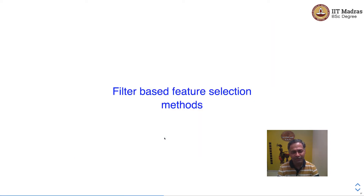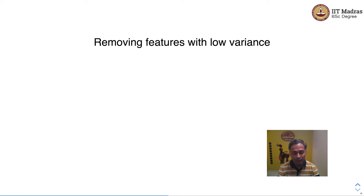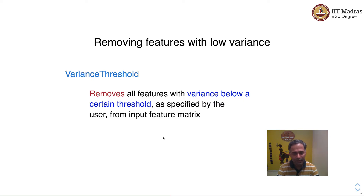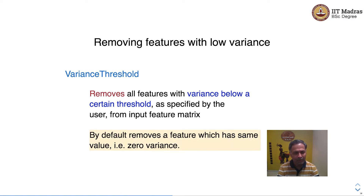Let's look at filter-based feature selection methods. The first one is VarianceThreshold, which removes features with low variance. Sometimes in a feature column, all values are very close to each other or they have a single value. Such features have very low variance and are not useful in training. VarianceThreshold removes all features with variance below a certain threshold provided by the user. By default, it removes features which have the same value, i.e., zero variance.